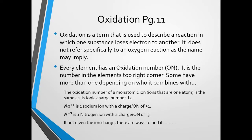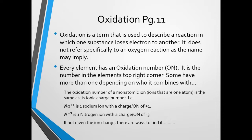Oxidation is a term used to describe a reaction in which one substance loses electrons to another. It does not specifically refer to a reaction involving the element oxygen, as the name would imply — it has to do with electrons. Every element has an oxidation number, which is the number in the upper-right corner of your periodic table of ions. Some elements in the middle of the periodic table actually have a couple of different charges.